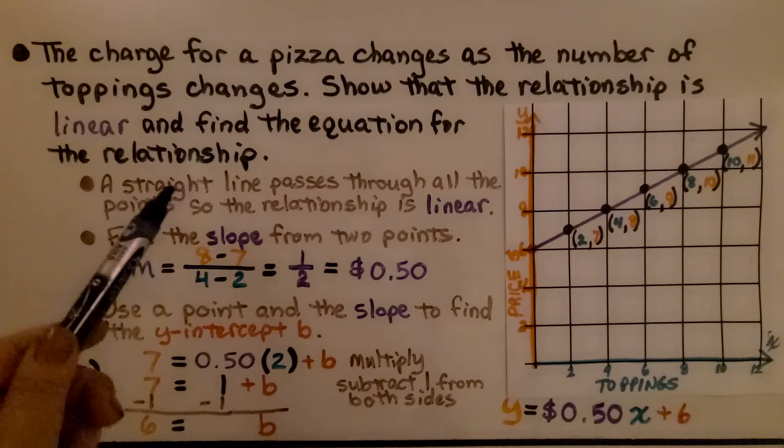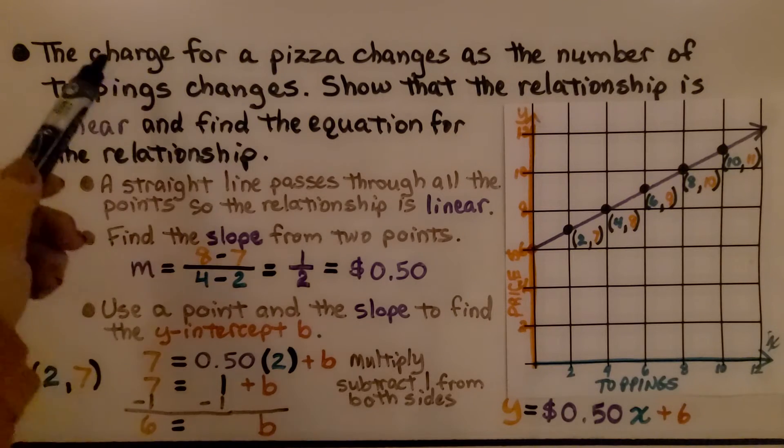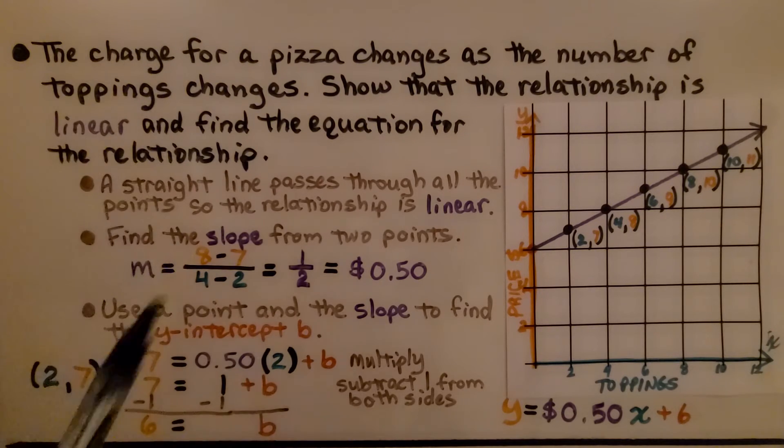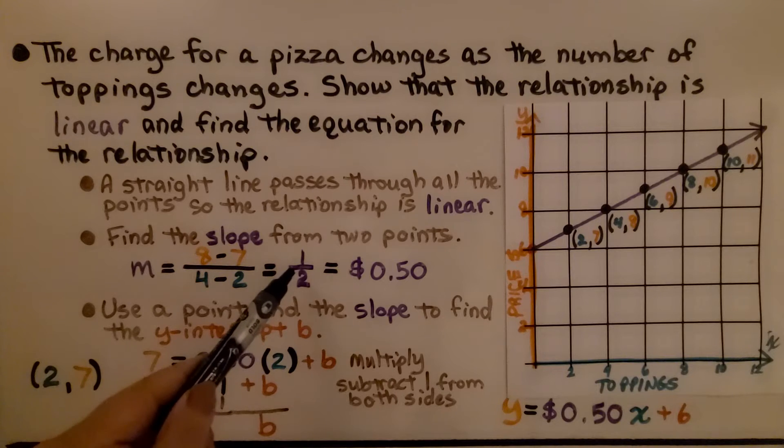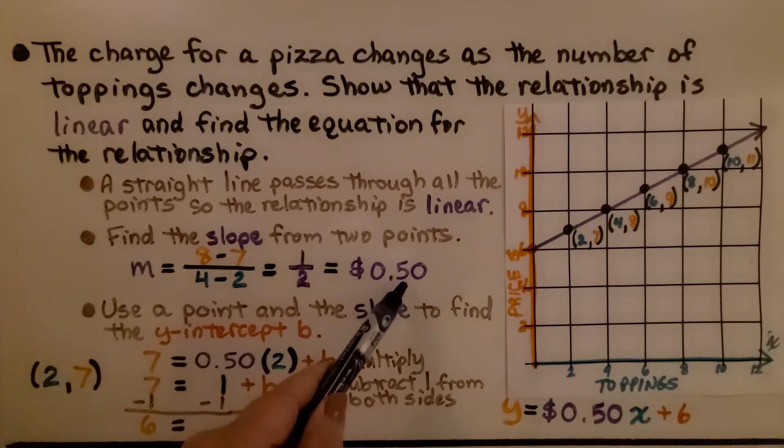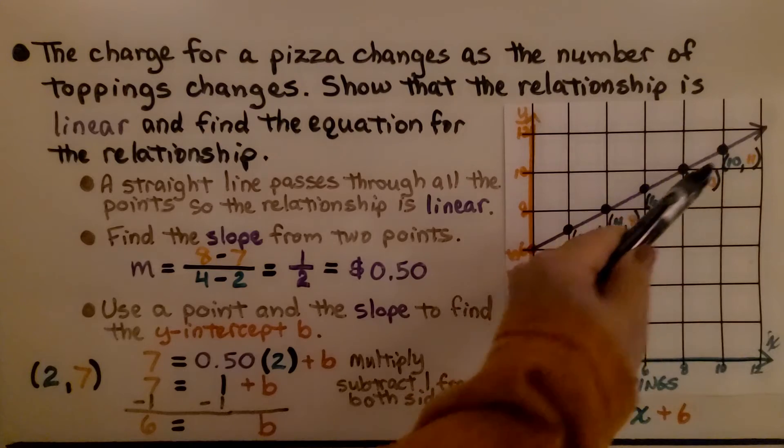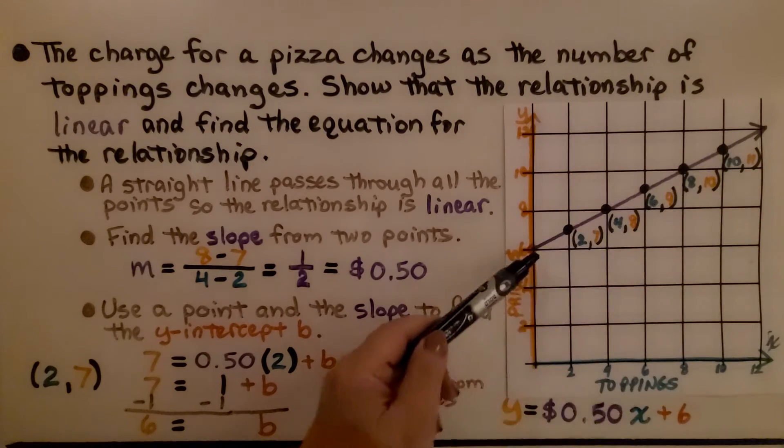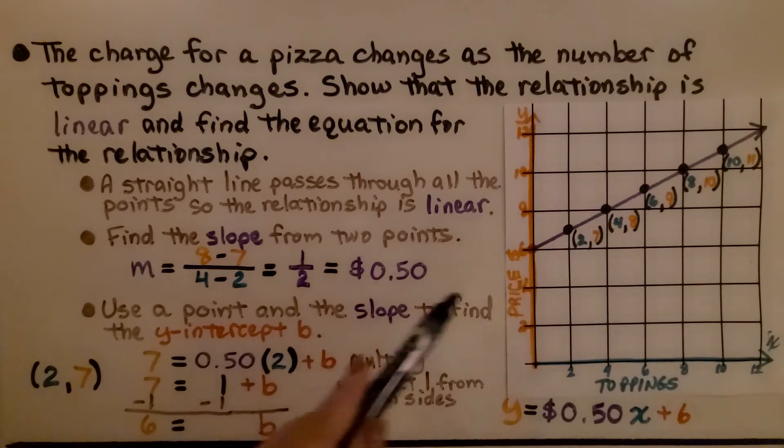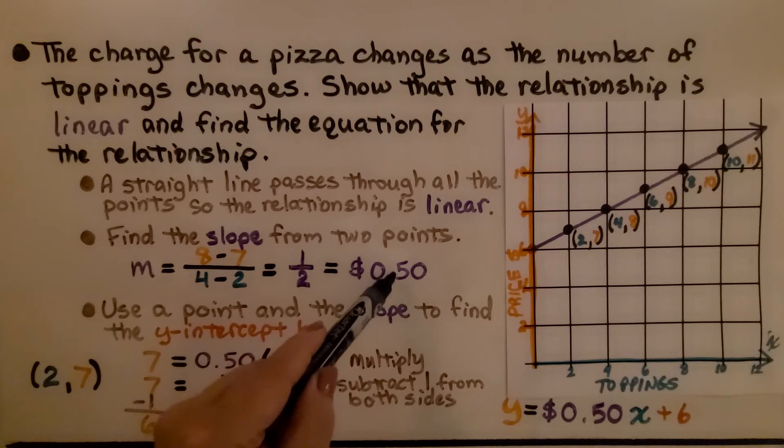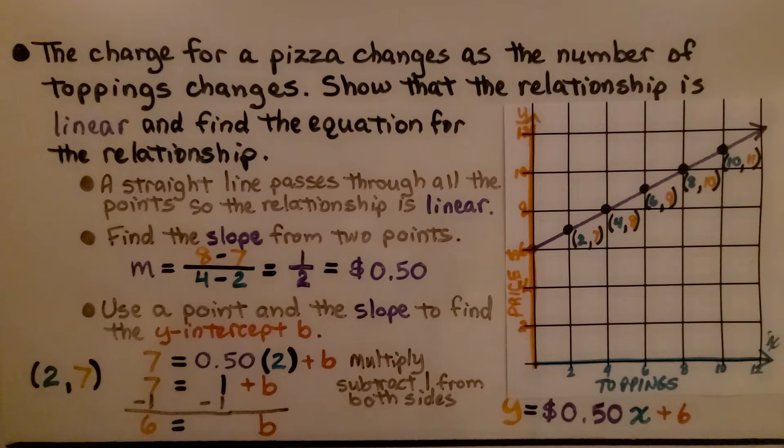We have to pay attention to what's happening here. They're talking about the charge, the cost for pizza toppings. So we know that this one half is actually 50 cents. The charge is increasing as we add more toppings. The cost of the pizza is increasing. So our slope, our rate of change is 50 cents, and that's 50 cents per topping.